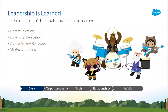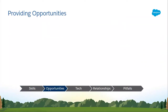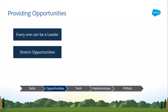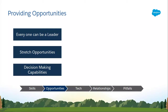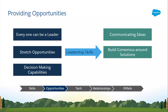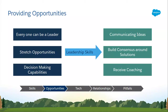To practice these skills, we need to provide opportunities. In our company, we work in an agile environment, so everyone on the team, irrespective of their title, will get an opportunity to lead projects and take initiative. This has proven very successful for us, and the key here is to provide the necessary support and direction. Providing stretch opportunities aids in decision-making capabilities and is conducive to providing leadership skills. They will learn to communicate ideas to various stakeholders, build consensus around solutions, and receive coaching with the team leaders they collaborate with.